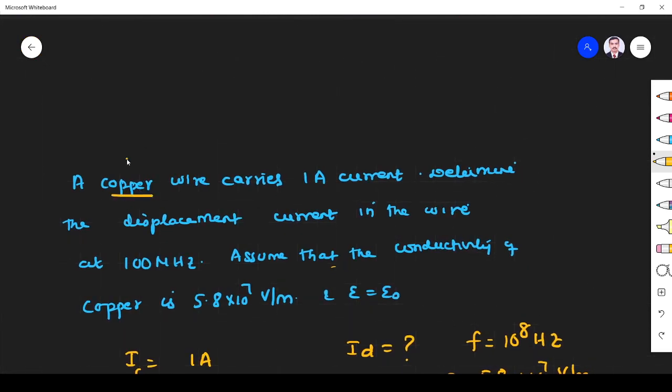Conductors have only conduction current. Displacement current is zero. This is present in the dielectric only. Yes or no? So displacement current is zero, that's what we have proved here.